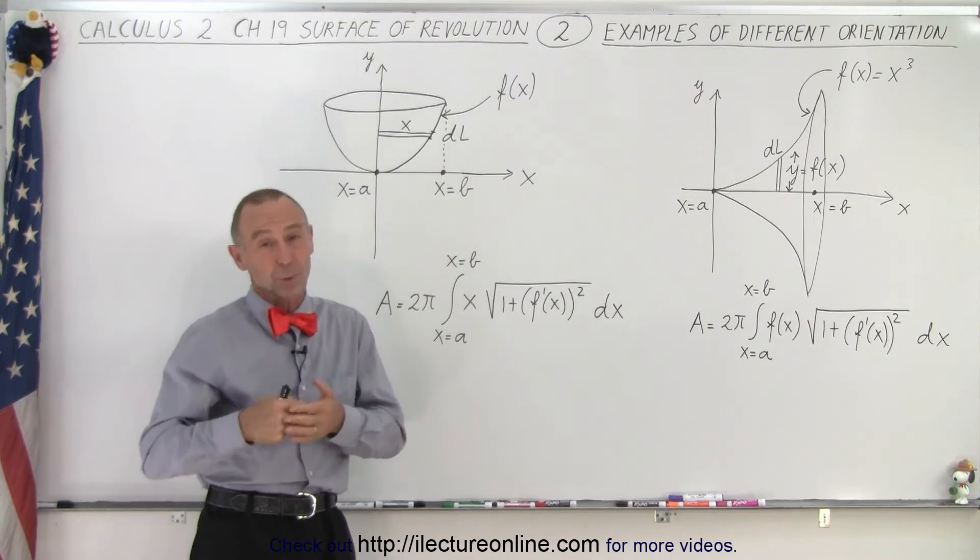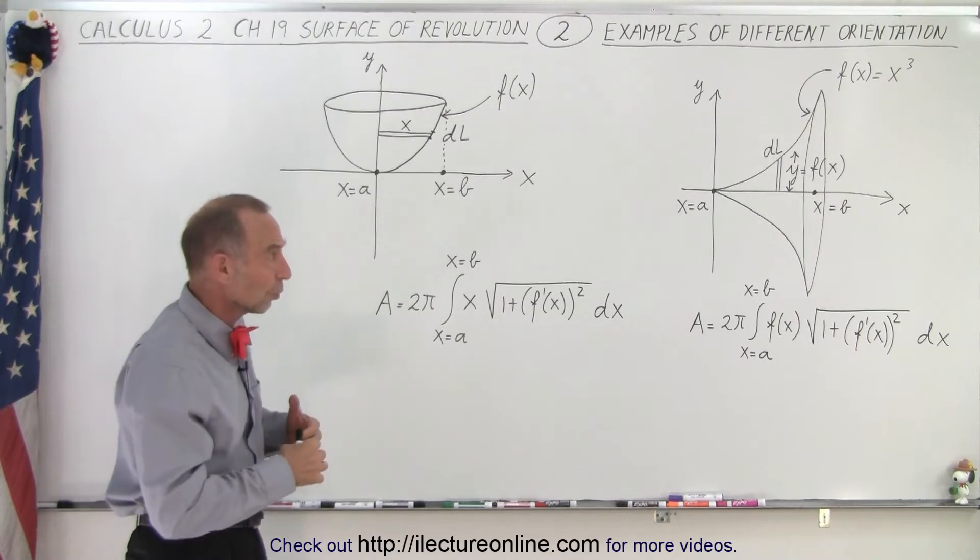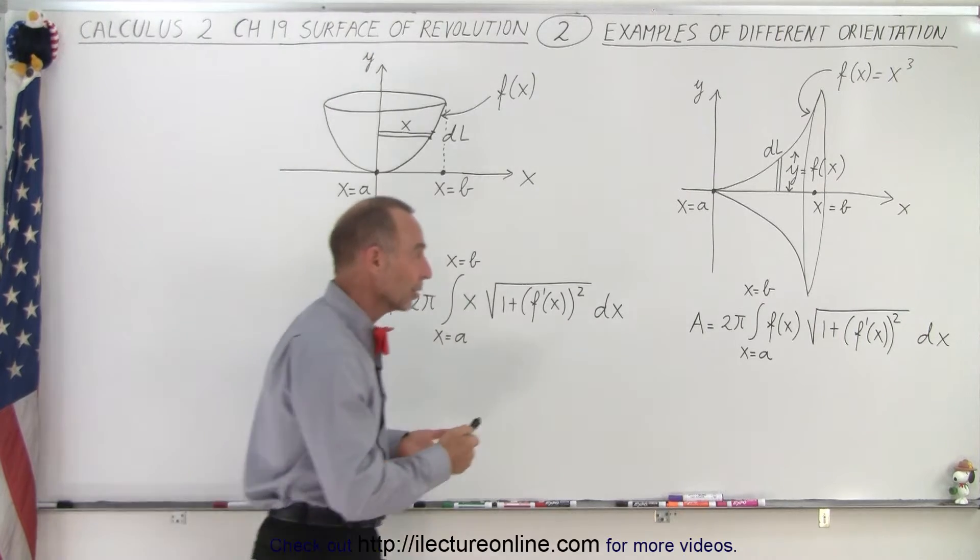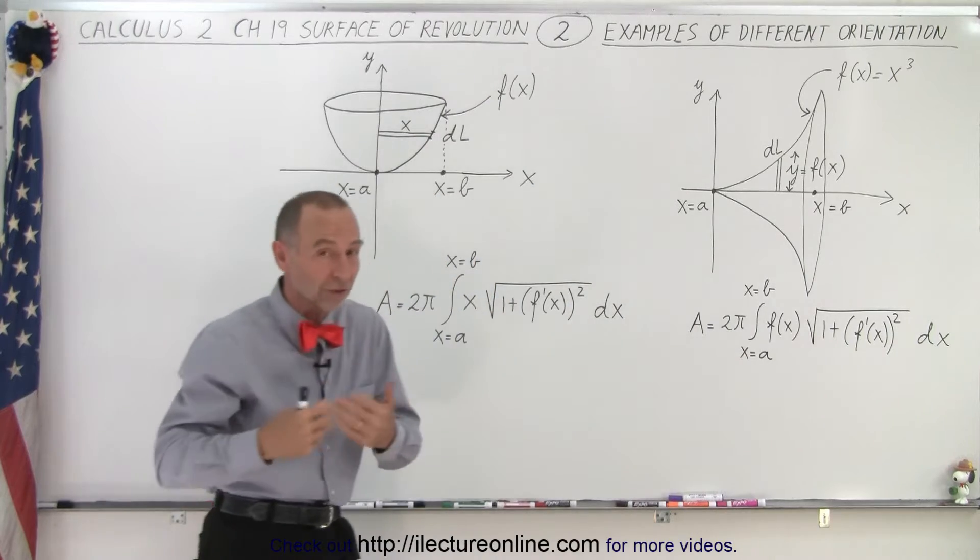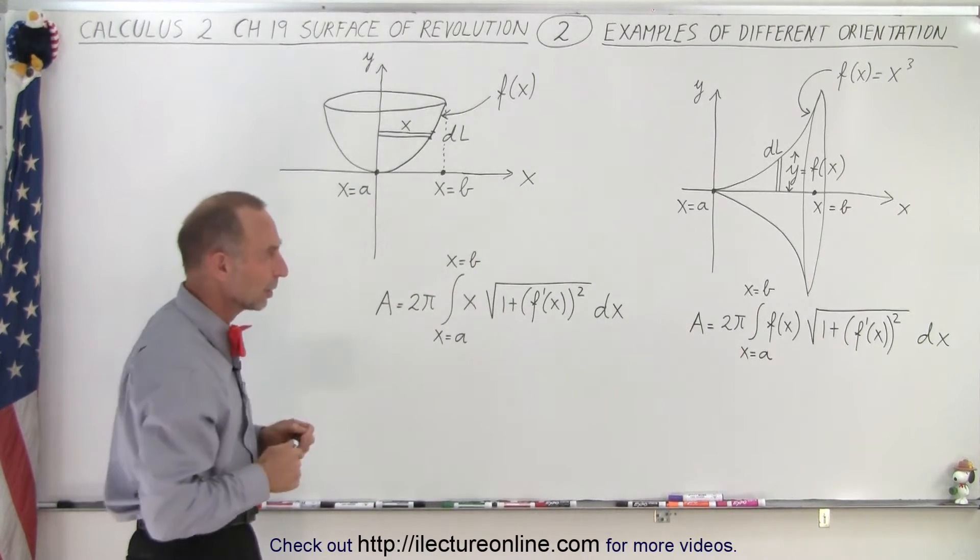And the method of finding the area is slightly different between the two, and there's also another thing we could do, just like with arc length. We could take the variable x or take the function of x and make that a function of y, just like we did with arc length, or we could do it like this. So let me show you what that looks like.